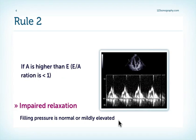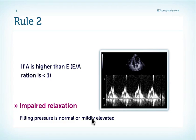Rule number two: if the A wave is taller than the E wave — in other words the E to A ratio is less than one — then the patient has impaired relaxation. Filling pressure in these patients is usually normal or only mildly elevated.